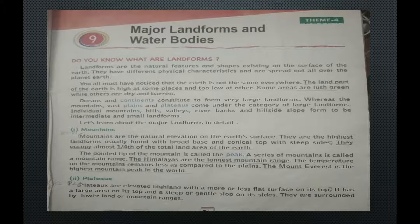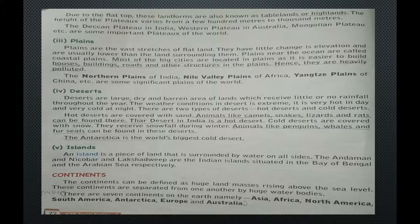Now, plateaus. Plateaus are elevated highland with a more or less flat surface on top. They have a large area on their top and a steep or gentle slope on their sides. They are surrounded by lower land or mountain ranges. Due to the flat top, these landforms are also known as tablelands or highlands. The height of plateaus varies from a few hundred meters to thousand meters. The Deccan Plateau in India, Western Plateau in Australia, Mongolian Plateau, etc. are some important plateaus of the world.